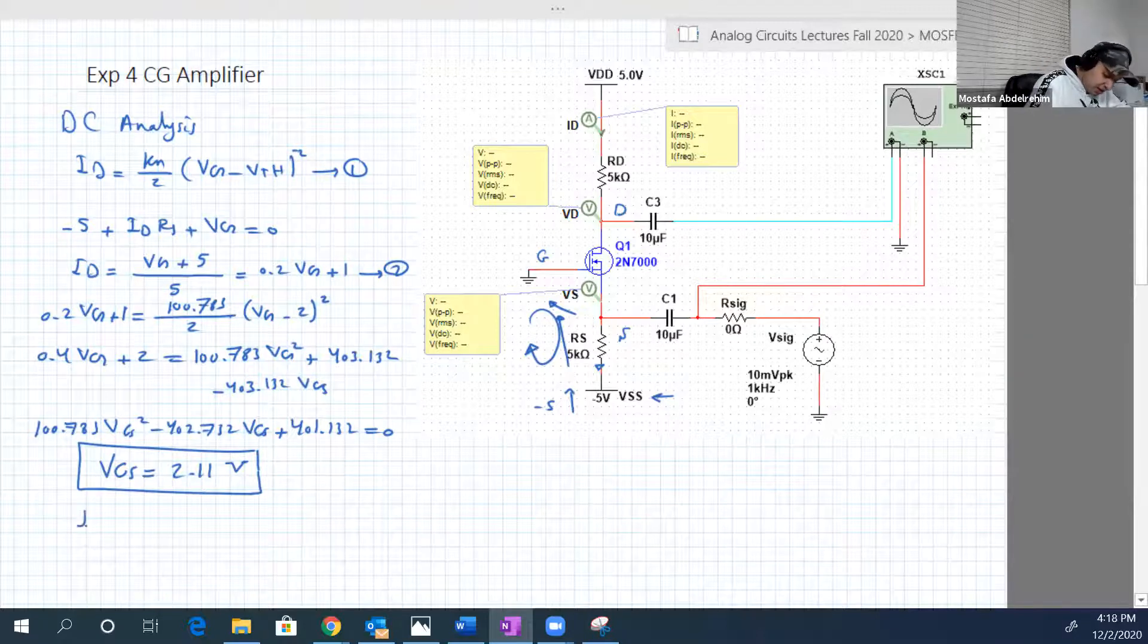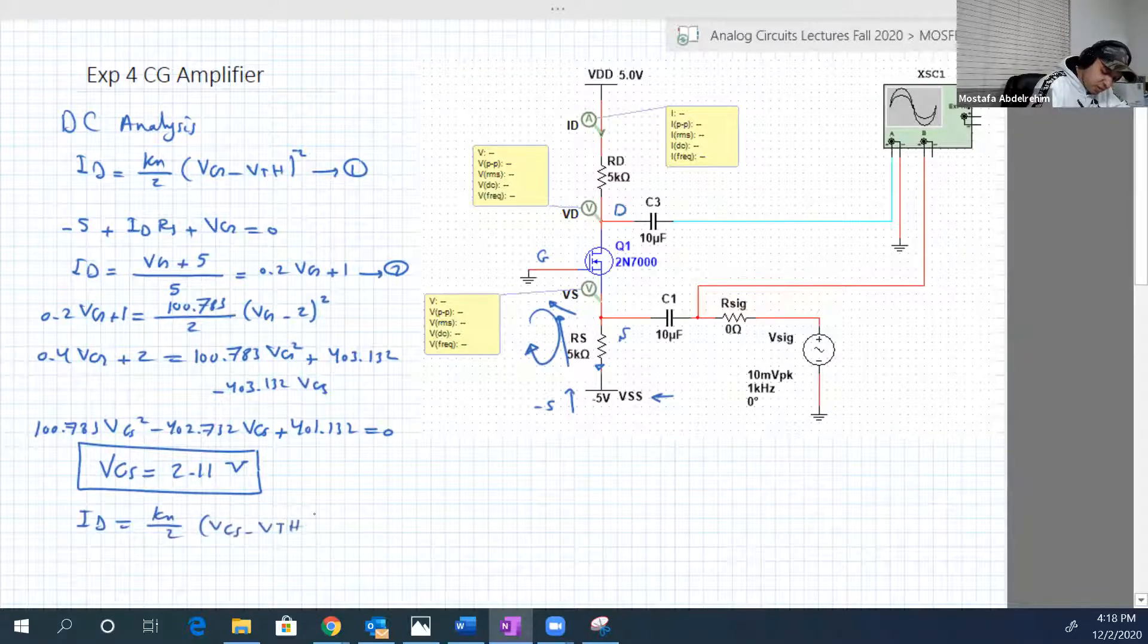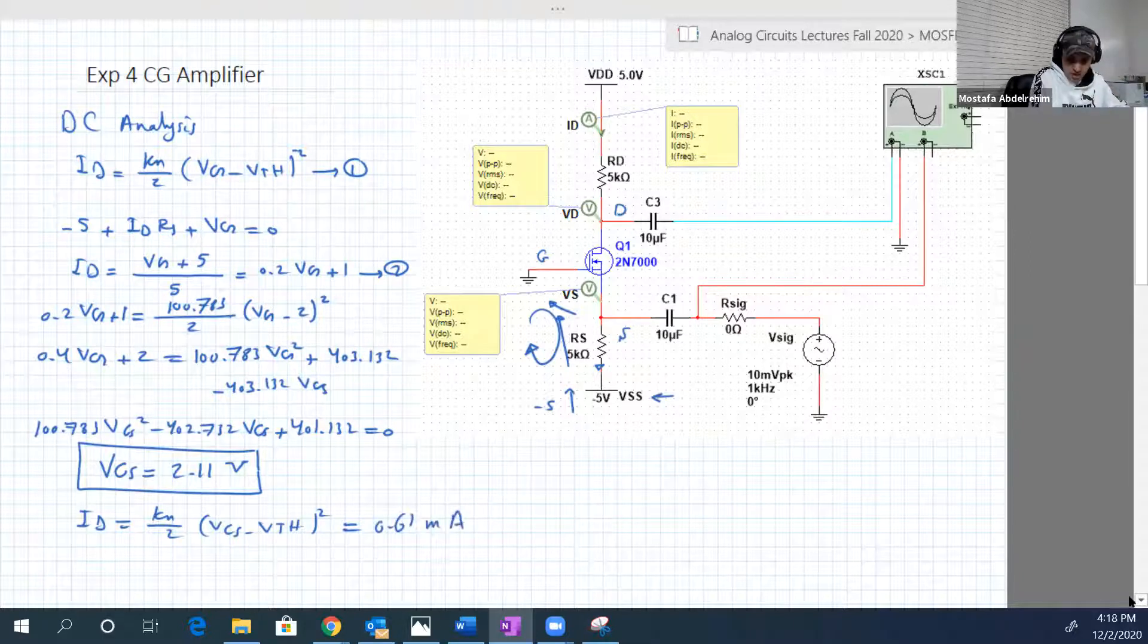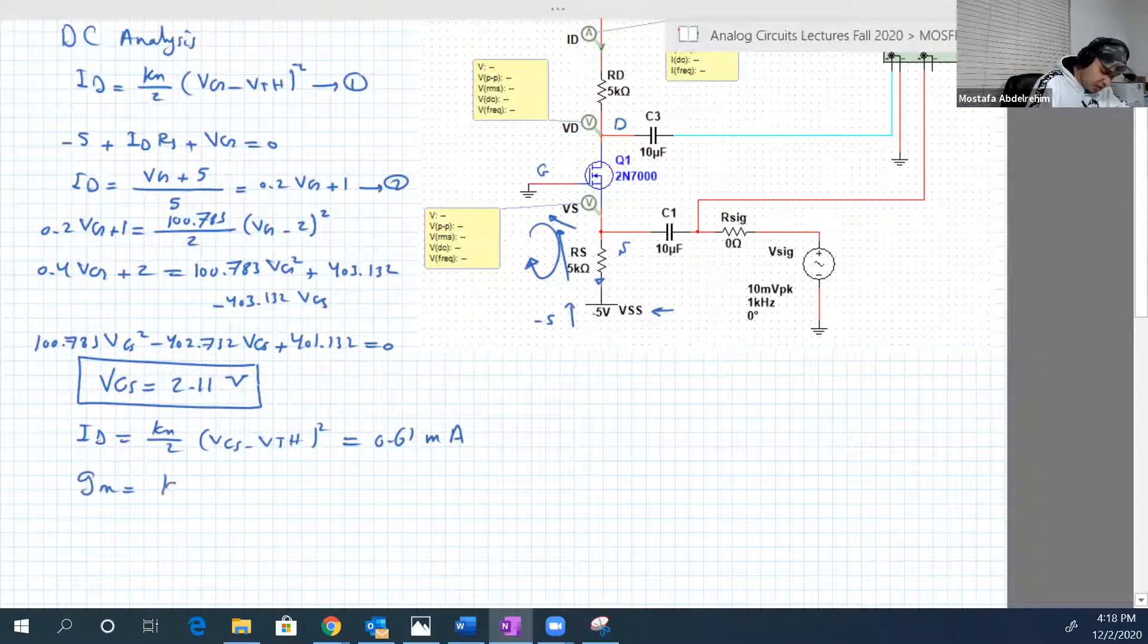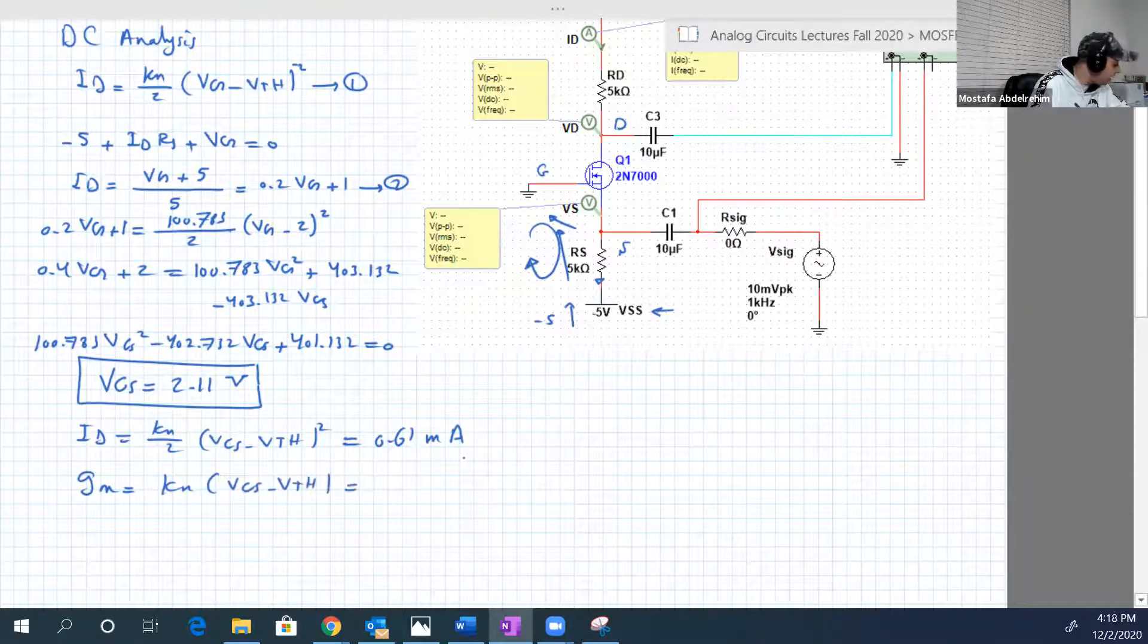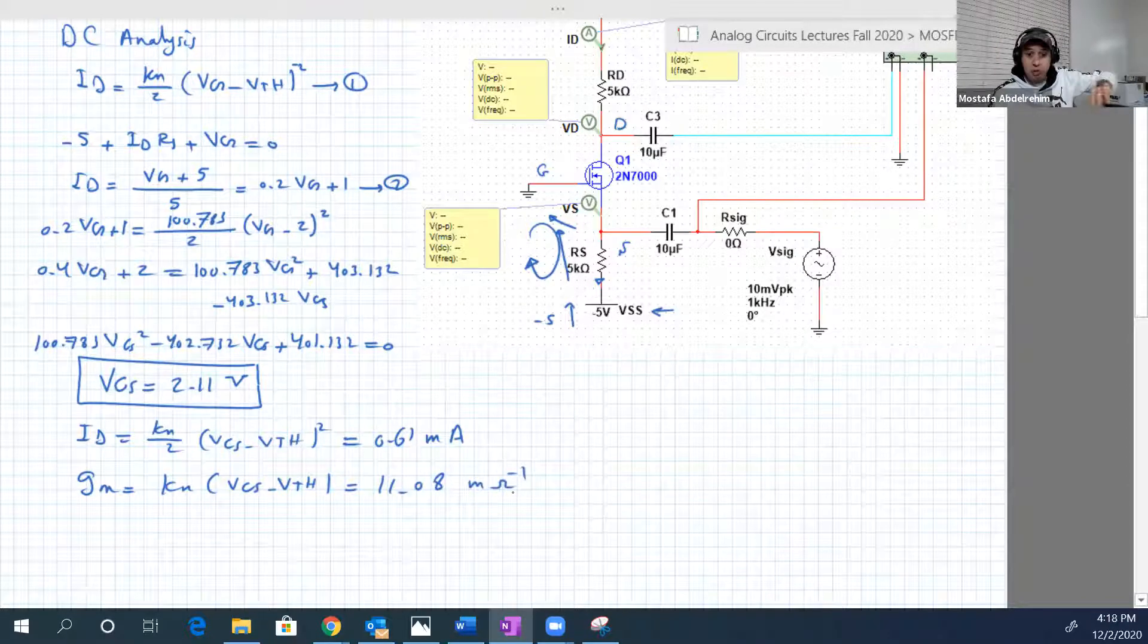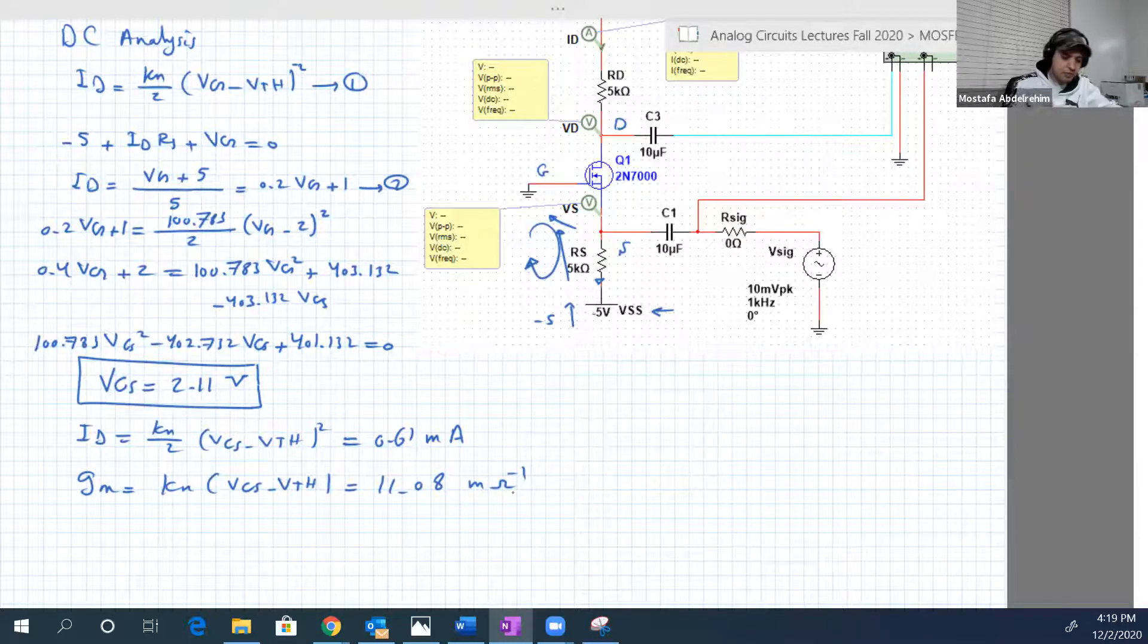So we can calculate now ID. ID is equal to KN over 2, VGS minus V threshold squared. So this guy will be 0.61 milliamps. And of course since we know now VGS, we can determine GM as KN times VGS minus V threshold without squaring. So this guy will be 11.08 milli-ohm minus 1. This is DC.